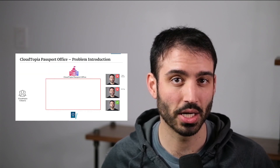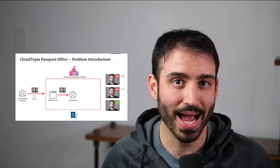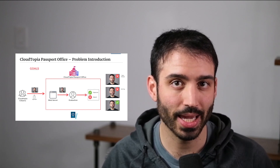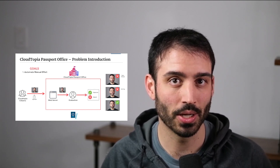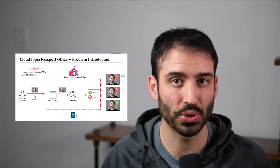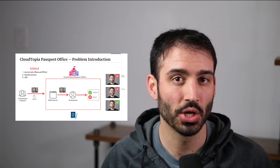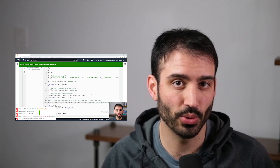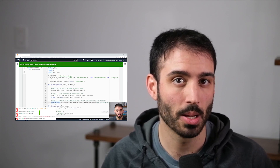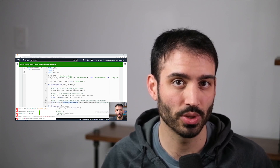This course puts you in the position as a software developer for a government agency. Your task is to develop a serverless application that automates the detection of certain facial features from user-submitted photographs. You'll write code that interacts with AWS services that evaluates these images before storing the results for later retrieval.